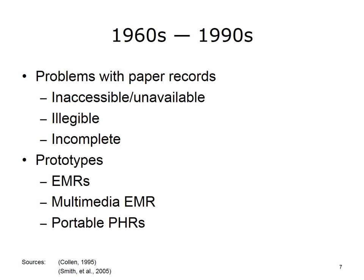Now onto the history. An early informatics leader, Morris Collin, has written a detailed history of the field. In his book, he identifies major problems with paper records of the 1960s: too often you couldn't find them, couldn't read them, and if you did find and read them, they were not complete. Collins cites studies indicating 5–10% of clinical encounters took place with no record, and 5–20% had incomplete records. Recent studies have shown that is still the case.